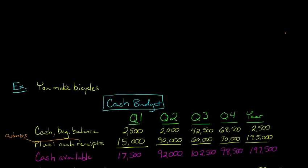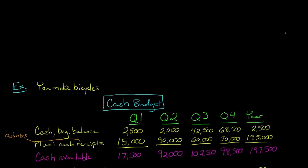Once we know that, we can put together the cash available. This isn't really that complex — we're just saying we started with $2,500 in the bank, and we're planning on generating $15,000 in cash from the bicycles we're going to sell in quarter one. So cash available, however you want to think about it, we're going to have $17,500 cash in quarter one.